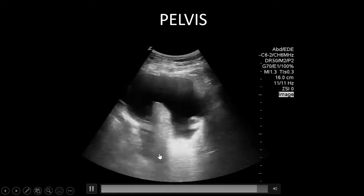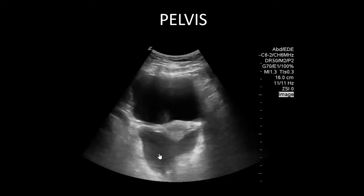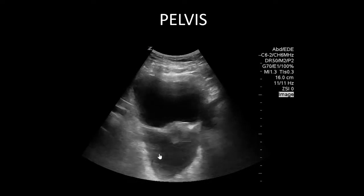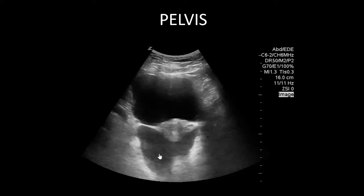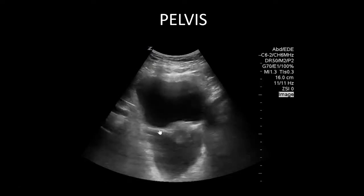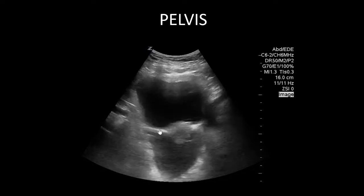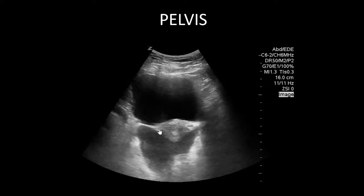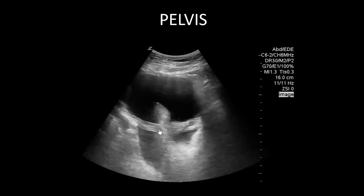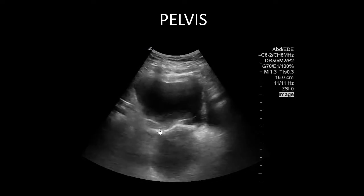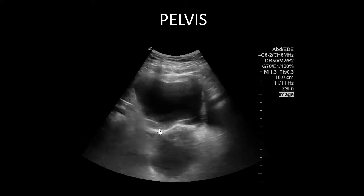The problem is that females may have physiologic free fluid in their pelvis. When ultrasounding the pelvis, you need to determine if the fluid is physiologic and supposed to be there, or pathologic and not supposed to be there. One way to tell: if you only see fluid in a female's pelvis and not in the right or left upper quadrant, it's more likely physiologic. However, if you see fluid in the pelvis and also in the right and left upper quadrants, that more likely makes it pathologic free fluid.